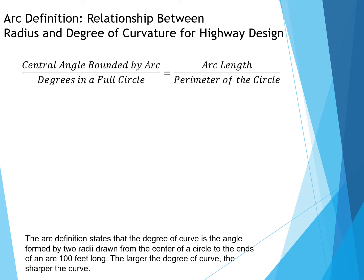In general, we're going to look at this relationship where we have the central angle bounded by the arc divided by the degrees in a full circle equal to the arc length divided by the perimeter of the circle. This is how we're going to derive the equation between degree of curvature and the radius.